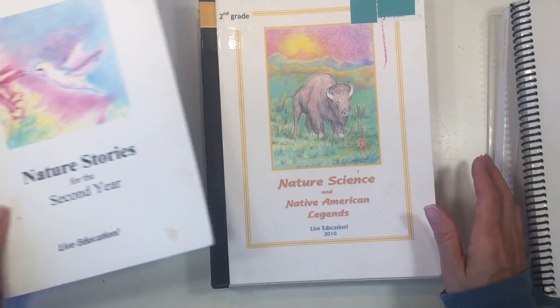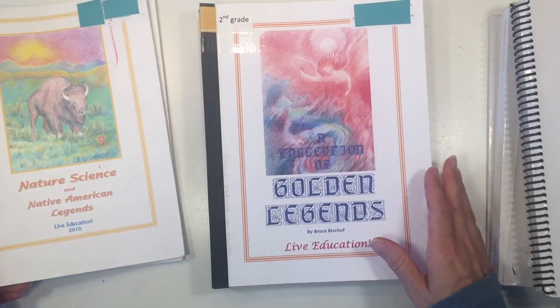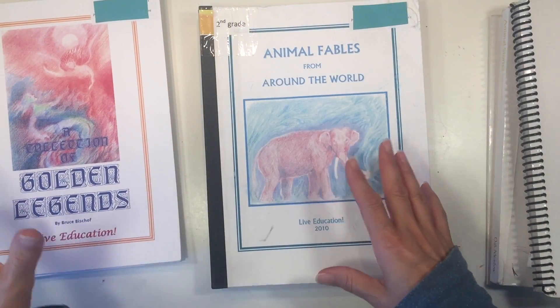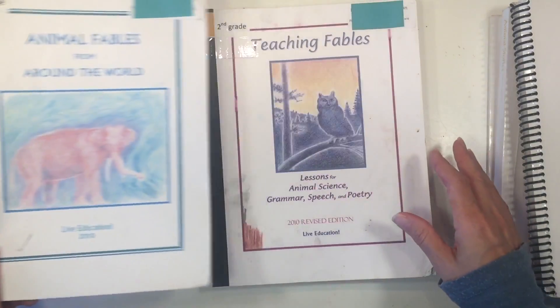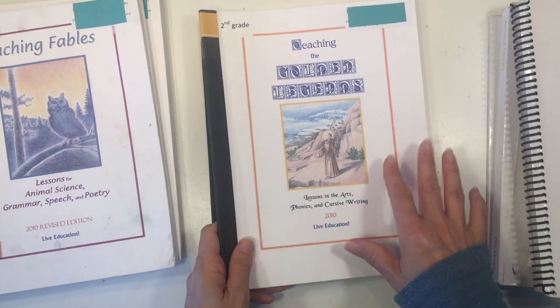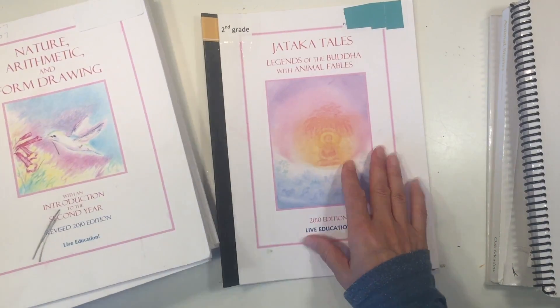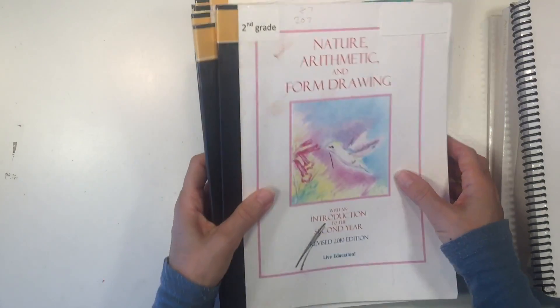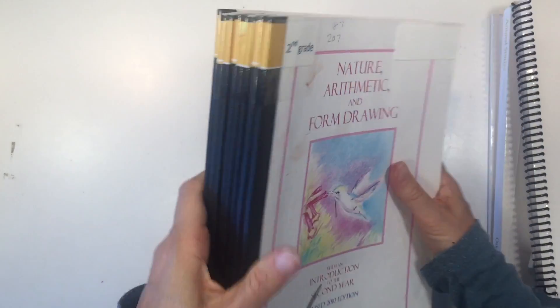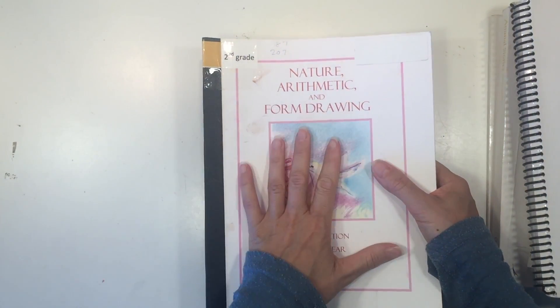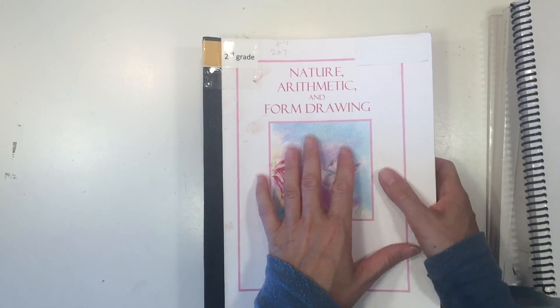Let me show you really quickly what comes with the second grade curriculum for Live Education. You have your nature stories, you have your nature science, you have your collection of golden legends. This is a resource book or source book. You have your animal fables from around the world, teaching animal fables, teaching the golden legends, nature arithmetic and form drawings, and the legends of the Buddha with animal fables. So you are getting quite a bit but not what you would typically expect from a boxed curriculum.